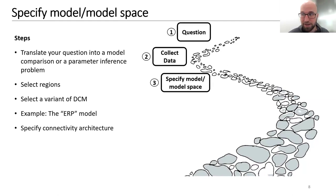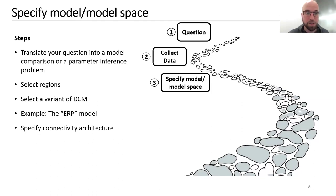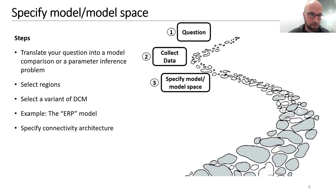Now that you have a good question, pre-processed data, and confirmed effects, how do you translate your question into a model comparison or parameter inference problem? These types of problems can be solved using DCM. For this you will need to select regions, select a variant of DCM — for example the ERP model I'll be talking about — and specify the connectivity architecture. Let me walk you through all of these steps.